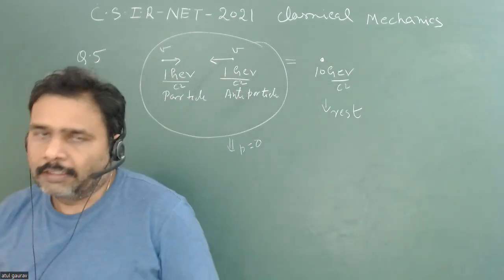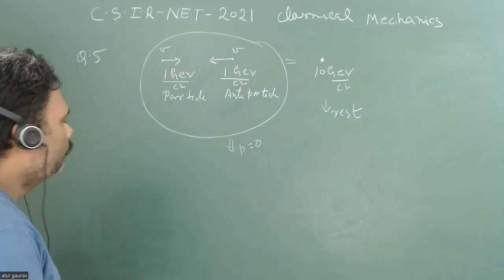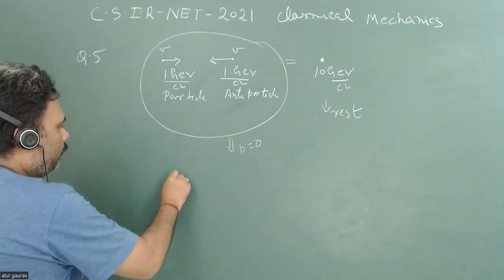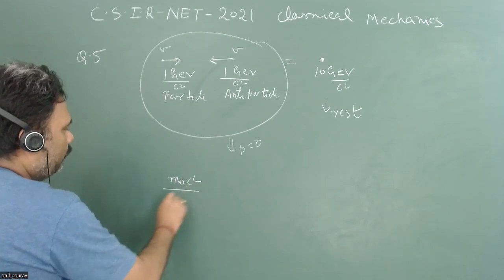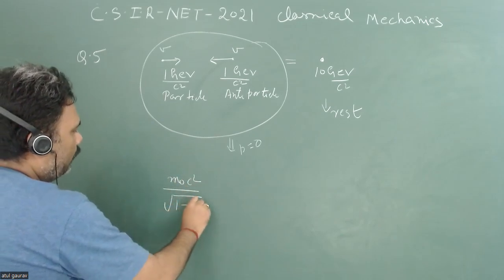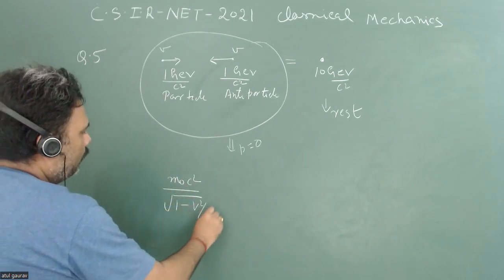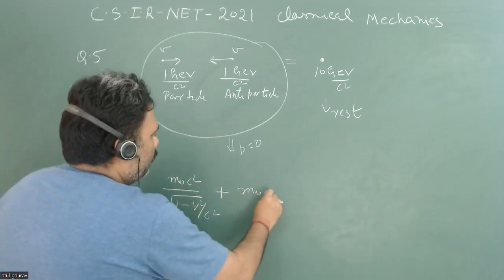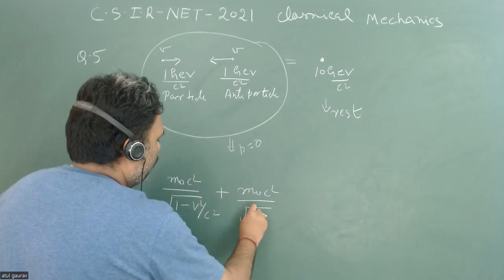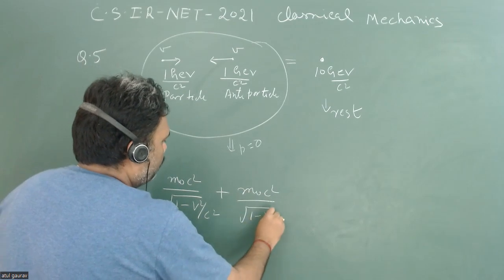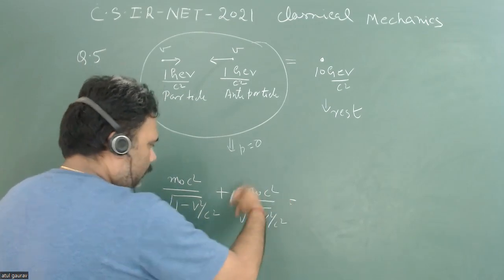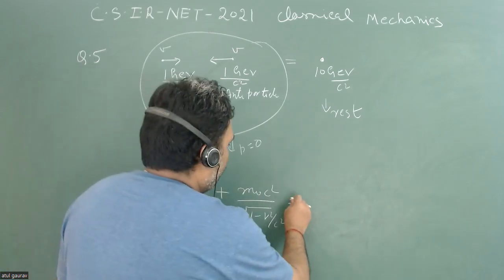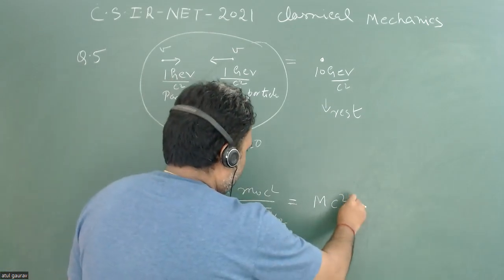Now we apply conservation of energy. The total energy is: m₀c² / √(1 - v²/c²) for the particle, plus m₀c² / √(1 - v²/c²) for the antiparticle, and this equals Mc², the rest energy of the composite particle.